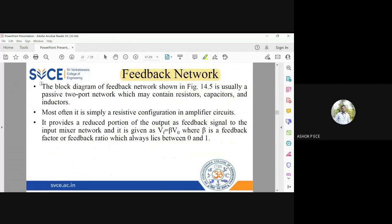Feedback network is usually made up of passive components: resistors, capacitors, and inductors. Mostly we are going to use only resistors in amplifiers. For amplifiers, we are going to use only resistors in the feedback network.